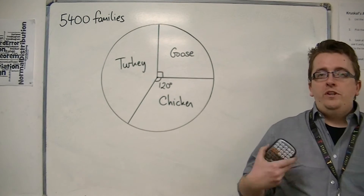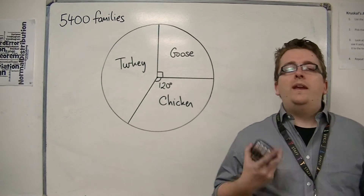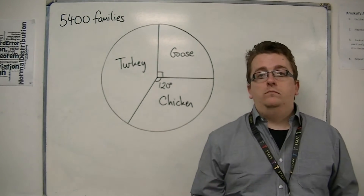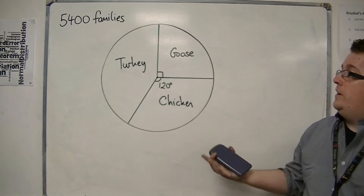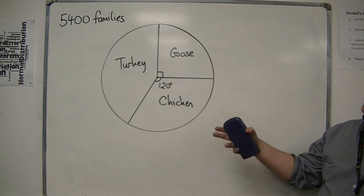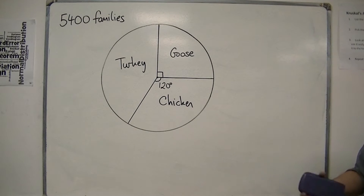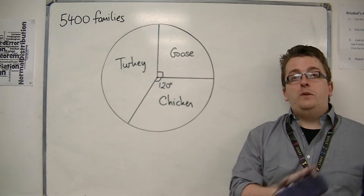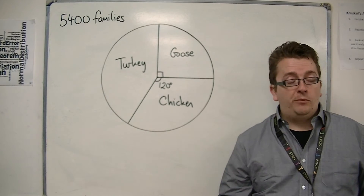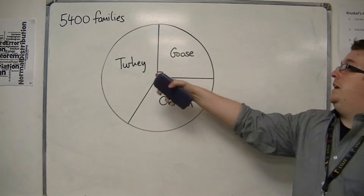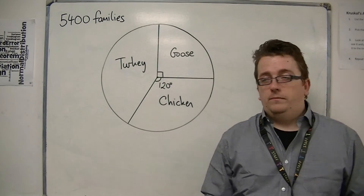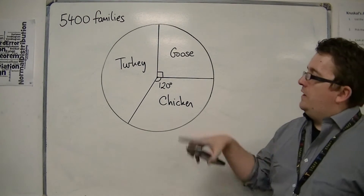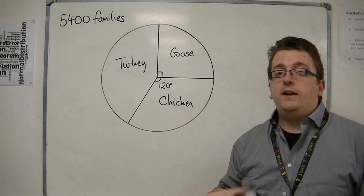Pie charts are a very nice way of representing data, because it's quite easy to understand that something with a larger slice of the pie has more, and it's quite easy to see which has the larger slice. In this practical example, we're looking at 5,400 families who were asked what type of food they were going to have in their Christmas meal — turkey, chicken, or goose. You can see that the majority are going to have turkey.